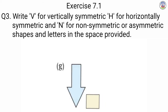Next is G — here we have a figure of an arrow. Arrow का figure center से cut हो रहा है और यह vertically line of symmetry से cut होगा, so we will write in the box V.